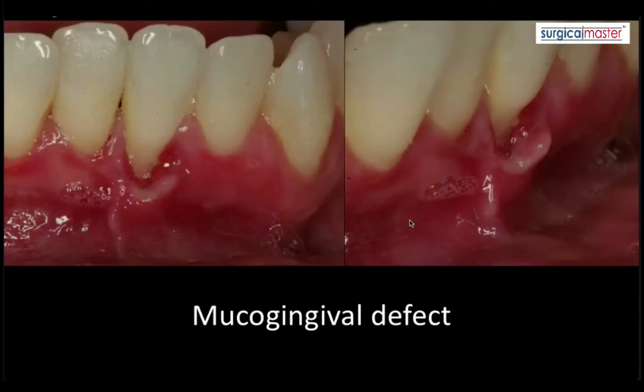Combined with poor oral hygiene, it was a plaque trap associated with a lot of pain and infection. You can see that the tissue is a little bit white and cyanotic.